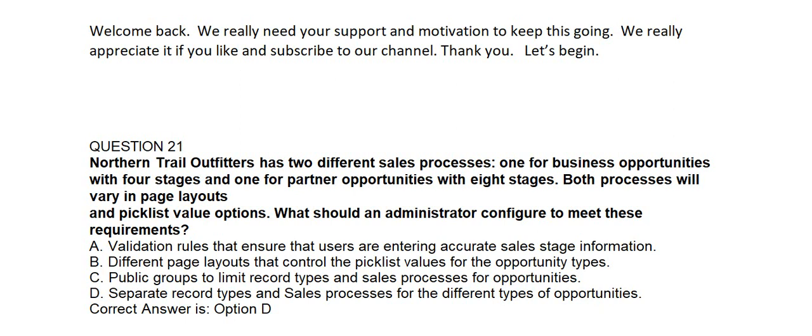Option A: validation rule that ensures that users are entering accurate sales stage information. Option B: different page layouts that control the picklist values for the opportunity types. Option C: public group to limit record types and sales processes for opportunities. Option D: separate record types and sales processes for the different types of opportunities.